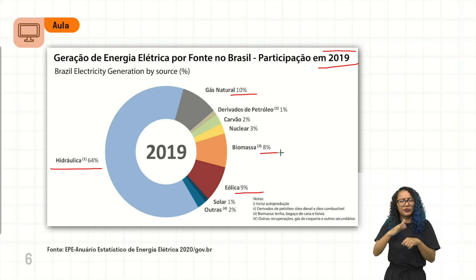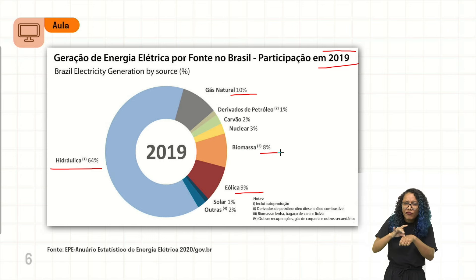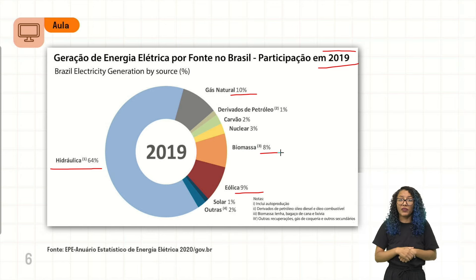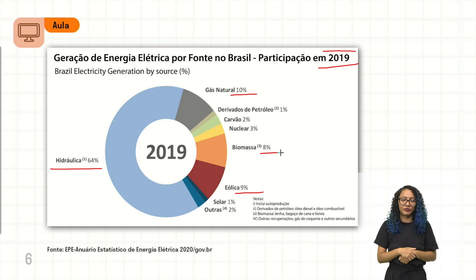And then the other sources: carvão, nuclear, oil, and solar energy with 1%. Solar energy, among other renewable energy sources, was pointed out at the beginning as having little incentive. Today, we already have a better distribution and use of this energy fonte no território brasileiro.